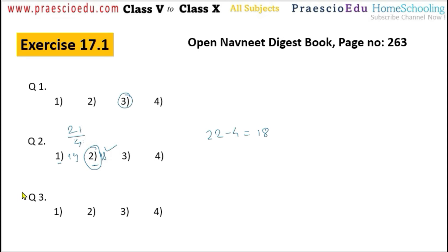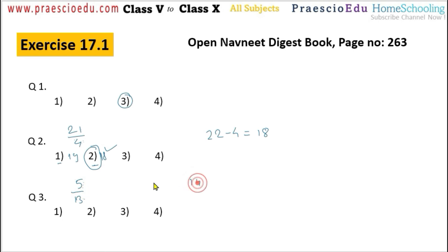Question number 3: which number should be added to the numerator of the fraction 5 by 13 to make it improper? To make it improper, the numerator must be greater than the denominator, which is 13. So the numerator must be at least 14. Therefore we need to add at least 14 minus 5 equals 9. So option number 4, which has the value 9, is the correct answer.